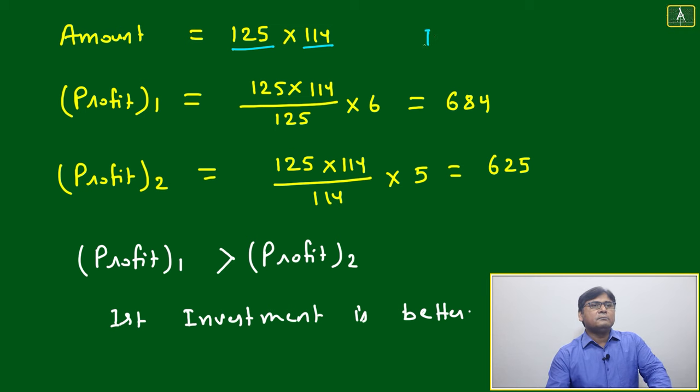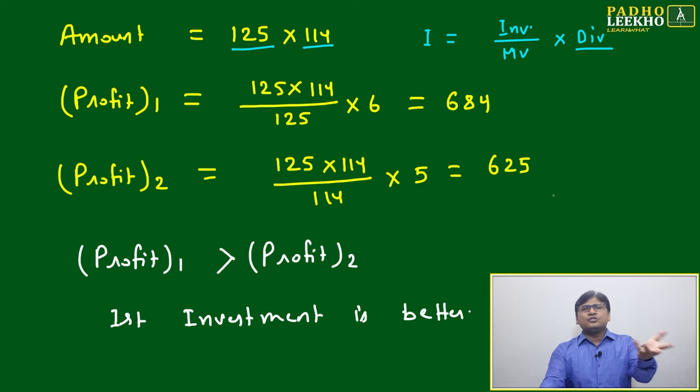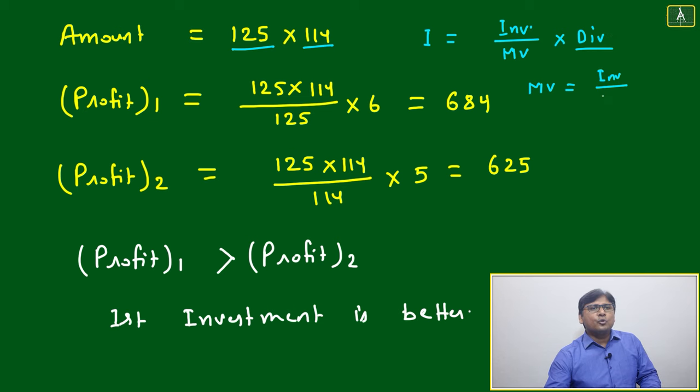We can understand income in variety of ways. Market value, what is market value? Total investment out of total income into dividend. The same thing we can write in different way: income will be equal to investment by market value into dividend. Matter is same.